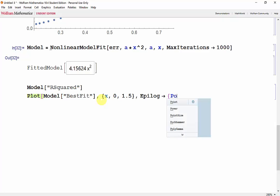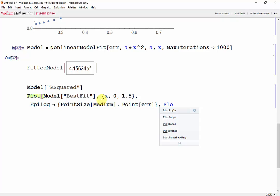With PointSize Medium, grabbing our points from error, and we'll label our graph 'Error vs h'.